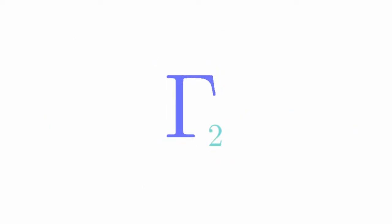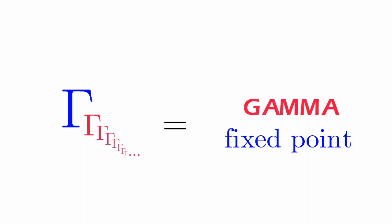We can have gamma two, gamma three, gamma four, gamma omega, or even gamma to the gamma nought. We can even have an infinite nesting of gammas. This is the gamma fixed point. You can keep going higher by creating new fixed points.